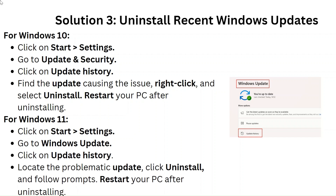Solution 3: Uninstall recent Windows updates. For Windows 10, click on Start, then Settings, go to Update and Security, click on Update History, find the update causing the issue, right-click and select Uninstall. Restart your PC after uninstalling.